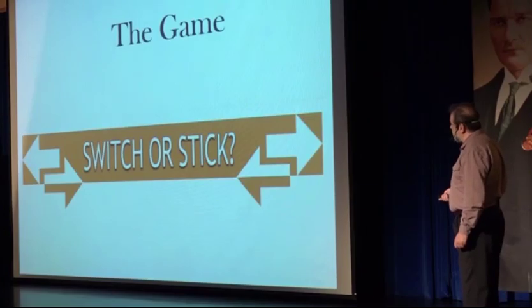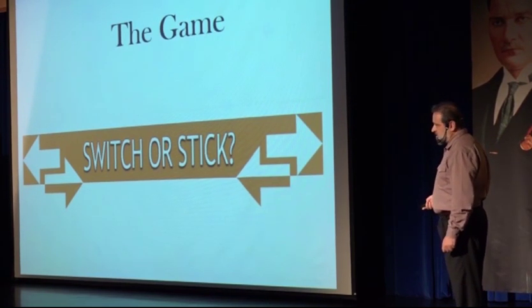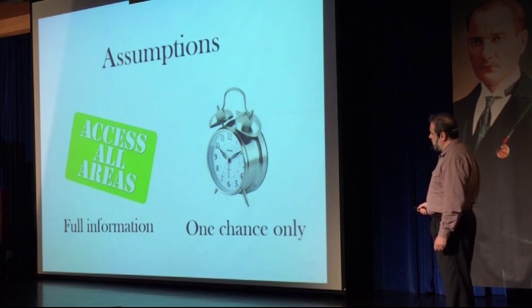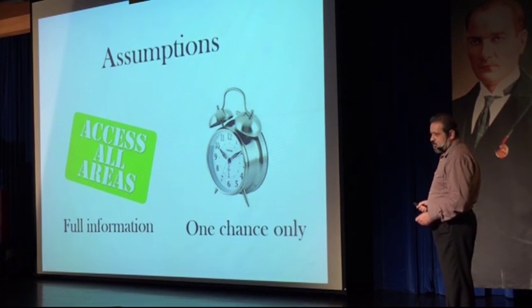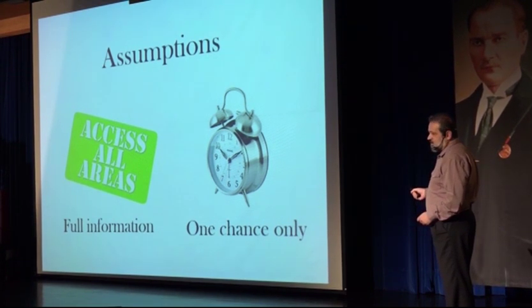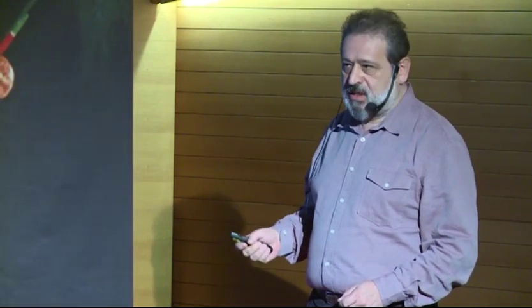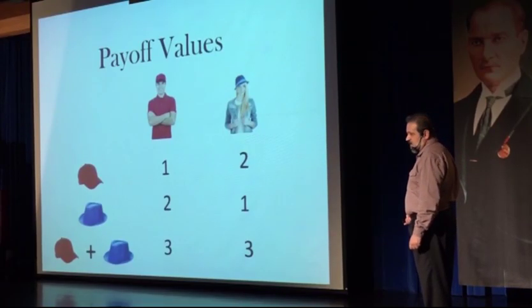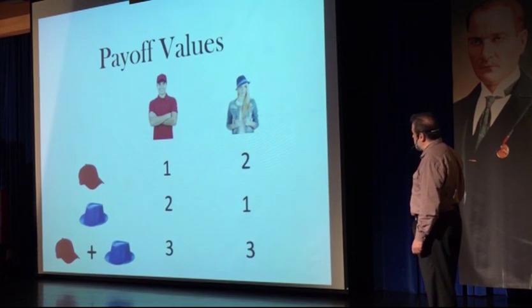Now, this is the game. They are given a choice: either give away the hat they have, or keep the hat they have. There are assumptions here. This is a full information game, which means they are fully aware of each other's desires. And this is a one-time shot — the game is not going to be repeated. These are the payoffs. What we call in game theory a payoff is the value of each hat for each of the players.